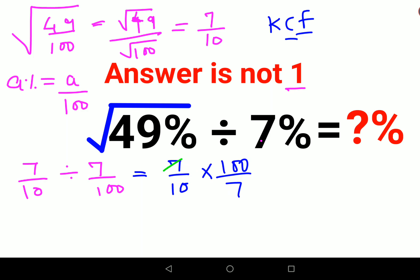Now if you see things are cancelling. So now I am just left with 10. But please understand we want the answer in terms of percentage. If this percentage sign was not given then this answer is correct.